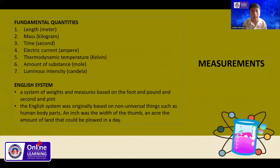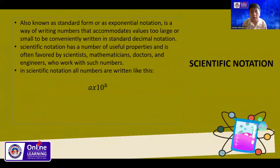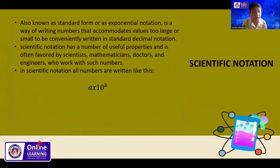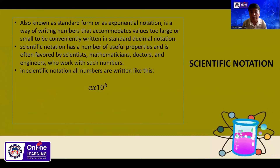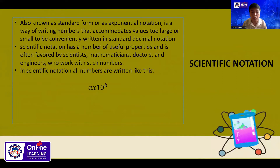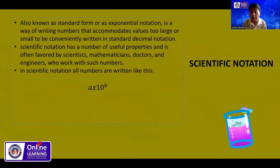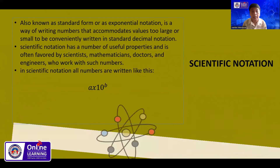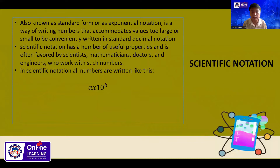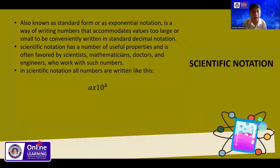Now let us proceed to what we call scientific notation. Scientific notation, also known as standard form or exponential notation, is a way of writing numbers that accommodates values too large or too small to be conveniently written in standard decimal notation. Scientific notation has a number of useful properties and is often favored by scientists, mathematicians, doctors, and engineers who work with such numbers.